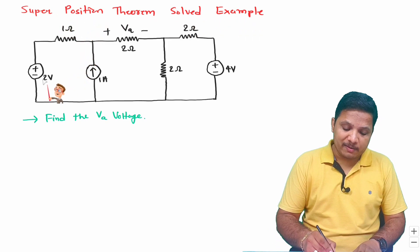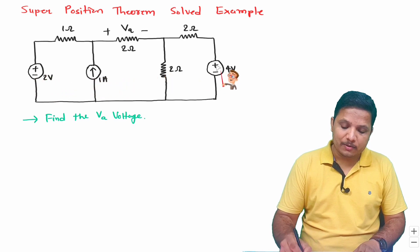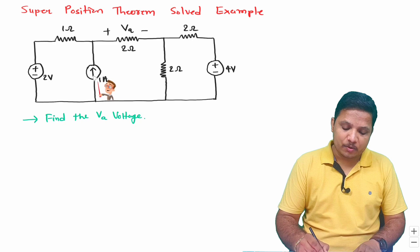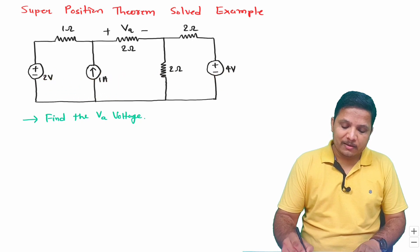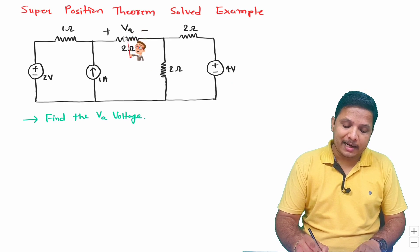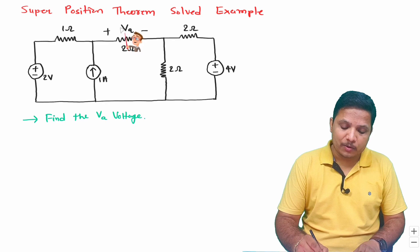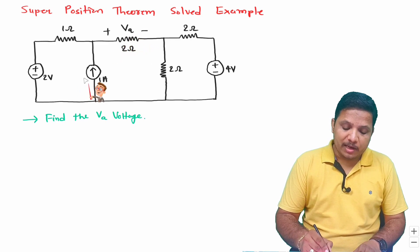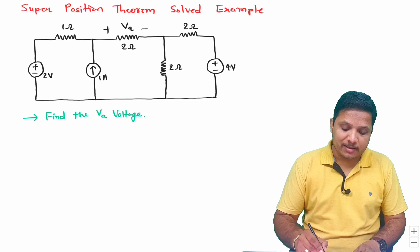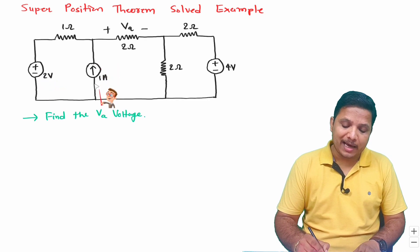In the superposition theorem, we will first consider the 2 volt voltage source and remove the current source and the other voltage source. After that, we consider the 1 ampere current source and remove both voltage sources. Then we consider the remaining voltage source and remove the other voltage source and current source. For each source, we calculate Va and finally take the algebraic sum. When removing sources: voltage sources should be short circuited and current sources should be open circuited.